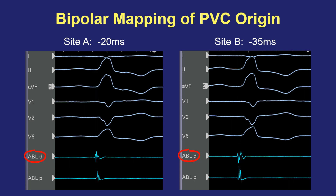By going point by point and creating an activation map — a timing map of all these bipolar signals — we can get very precise location and timing information in seeking out the origin for ablation. The polarity, positive or negative, of the bipolar electrogram doesn't really tell us anything about direction of the wavefront. It's really the timing that's critical with bipolar recordings.